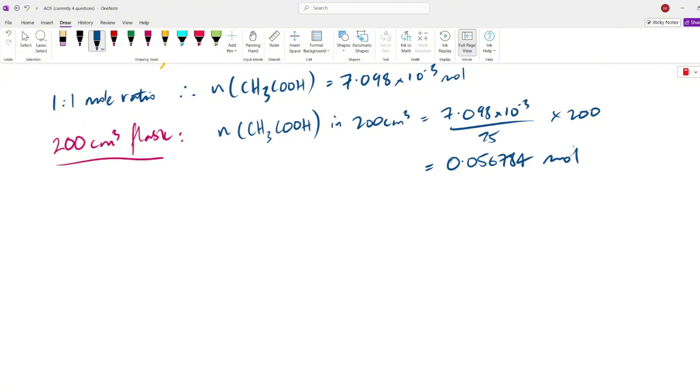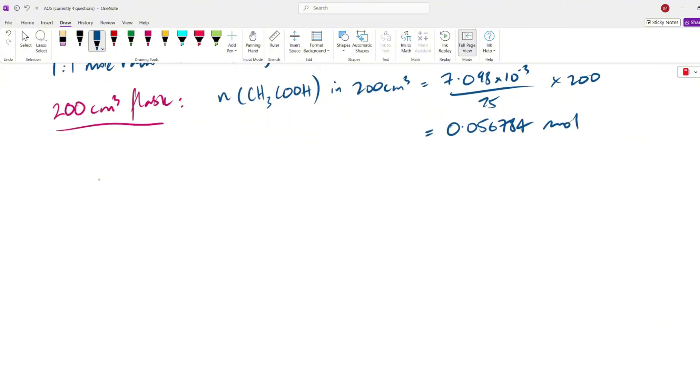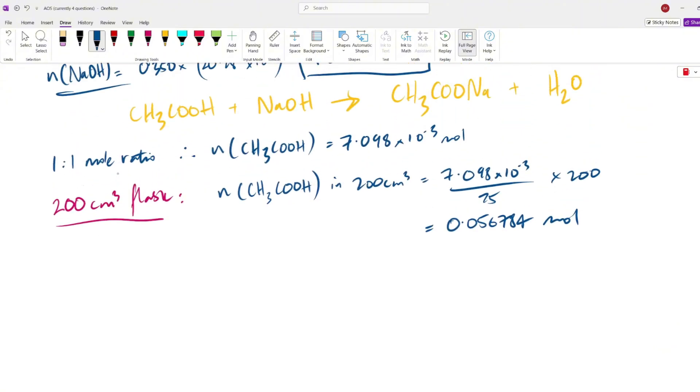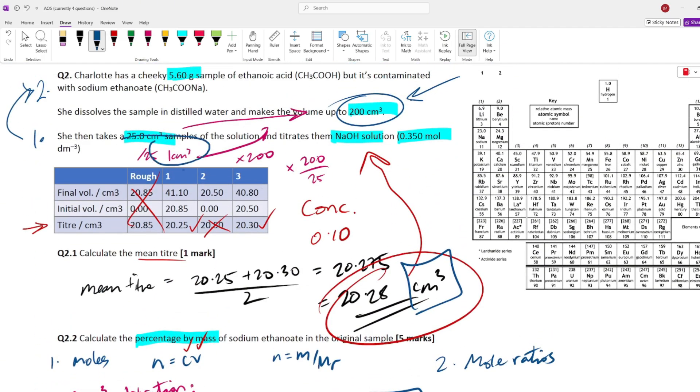So, that is all you have to do in these back titrations. Is you have to work out step one, what is the amounts that are within the actual titration? Step two, what is the amounts that are within the original flask? And you just multiply out by however the difference in the volume is. Just like I did here.